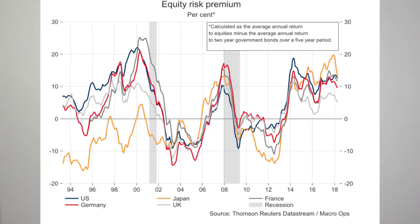We can also look at the rolling five year average annual return to equities relative to two year bonds. In this chart, the higher the line is, the tighter the spread is. And you can see we're at similar levels reached at the top of the last two cycles. All of this data shows that we're in the late cycle phase of this bull, but that phase lasts between 18 and 30 months and we're closer to the middle than the end. This puts the next bear market around 12 to 18 months from now.